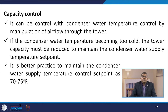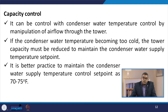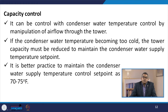Let us talk about the capacity control. The capacity can be controlled with condenser water temperature controlled by manipulation of airflow through the tower. If the condenser water temperature becomes too cold, the tower capacity must be reduced to maintain the condenser water supply temperature set point. It is a better practice to maintain the condenser water supply temperature control set point at 70 to 75 degrees Fahrenheit.